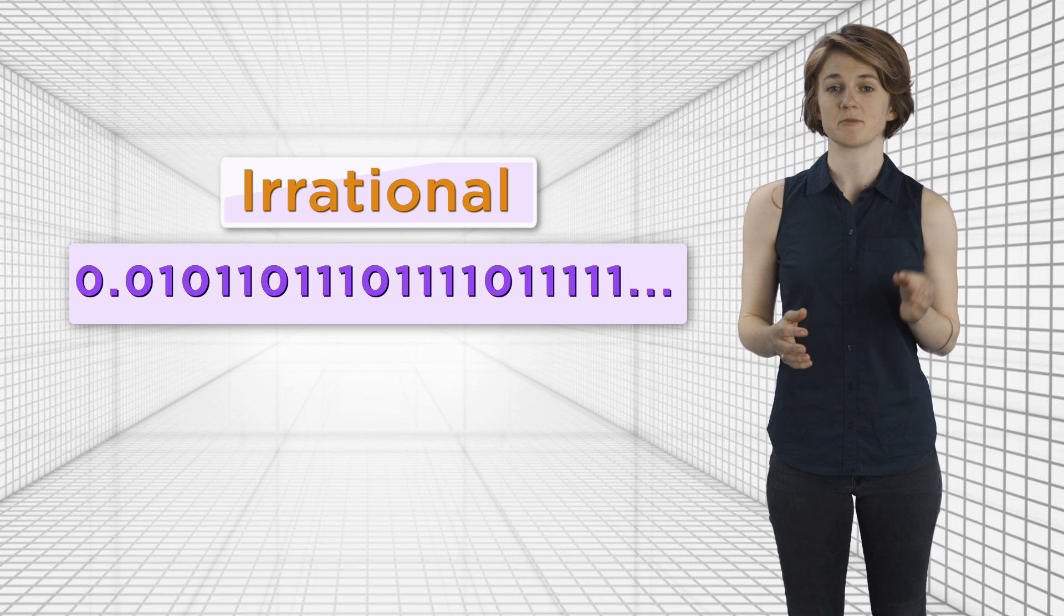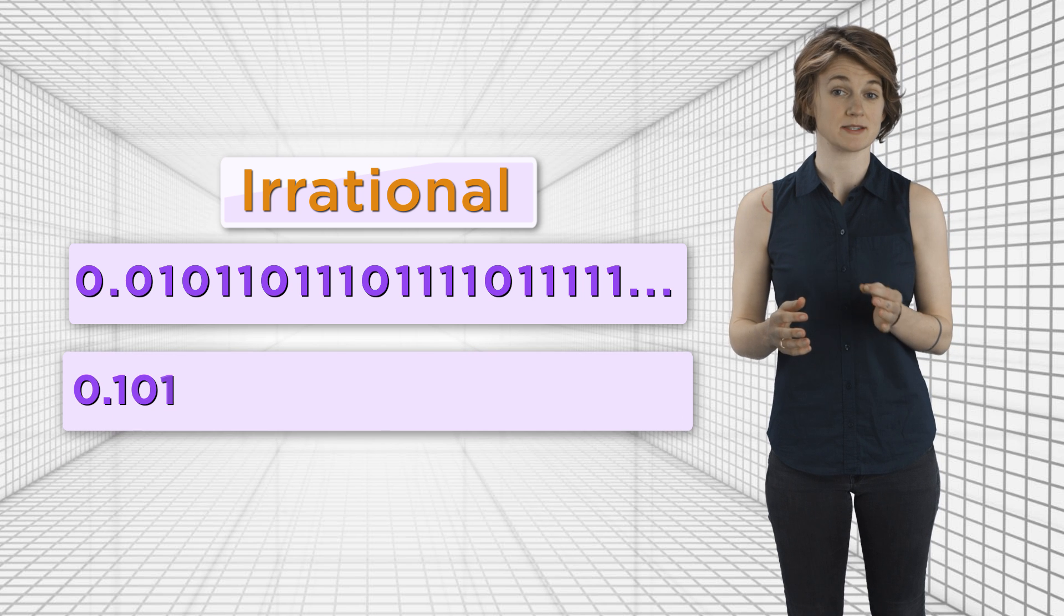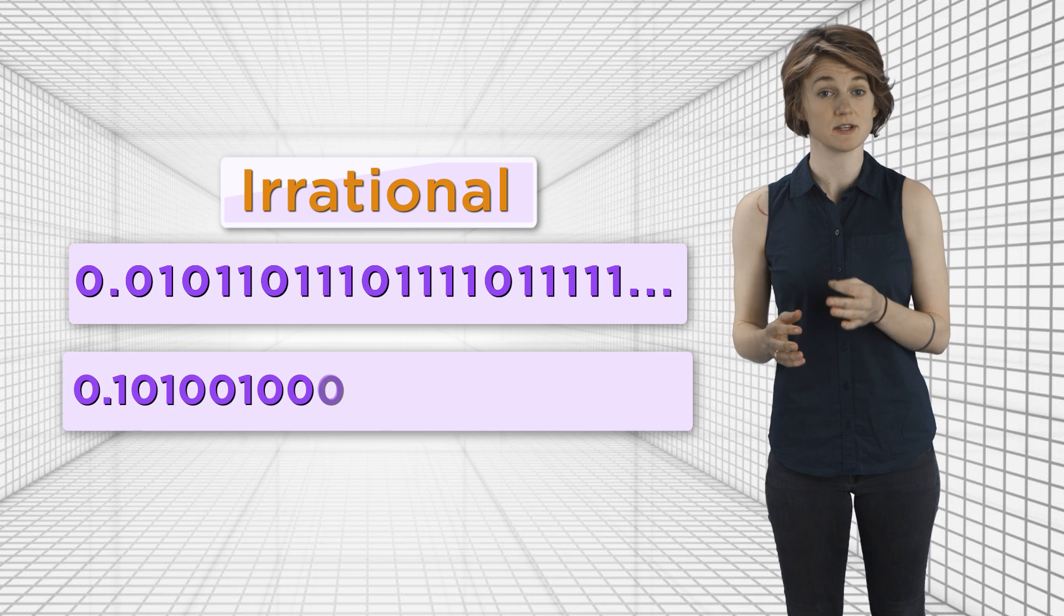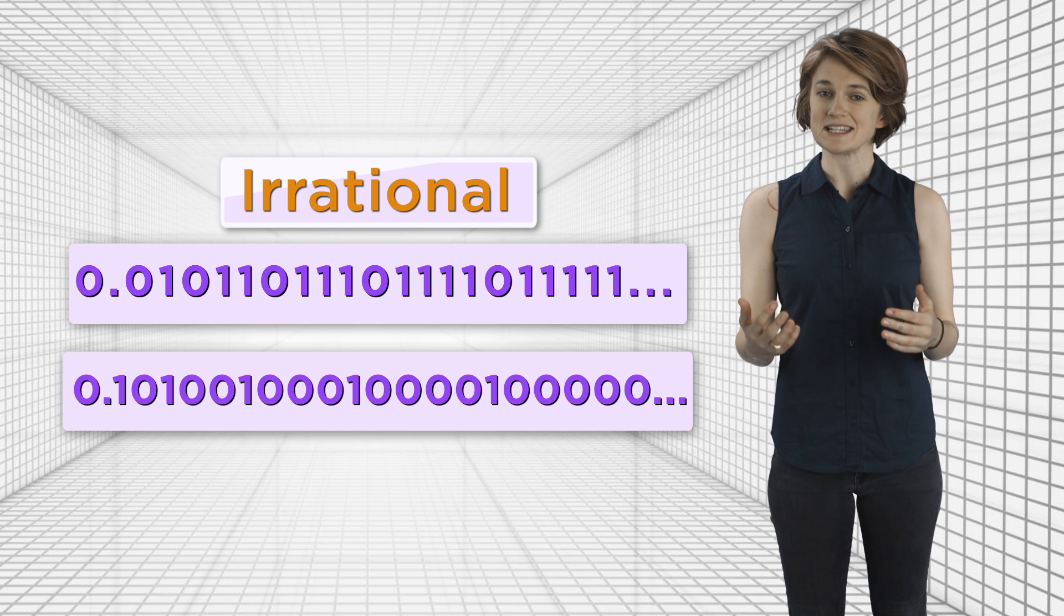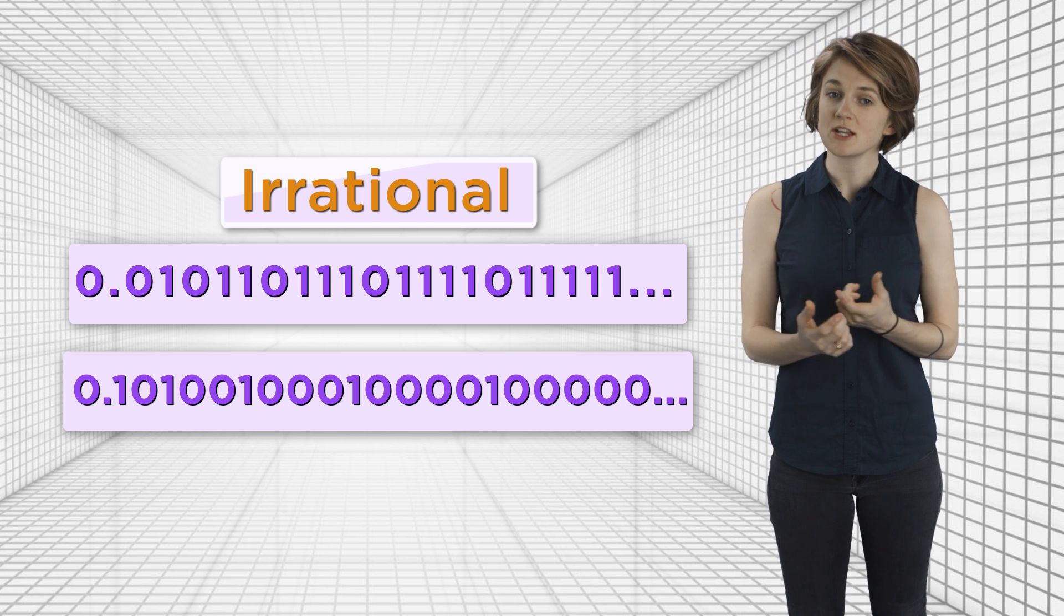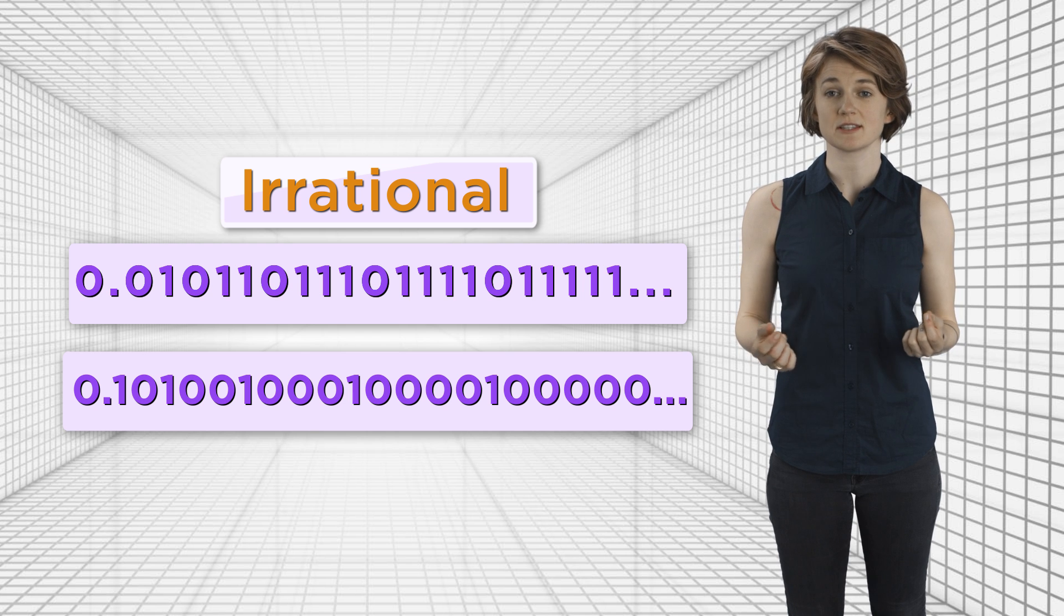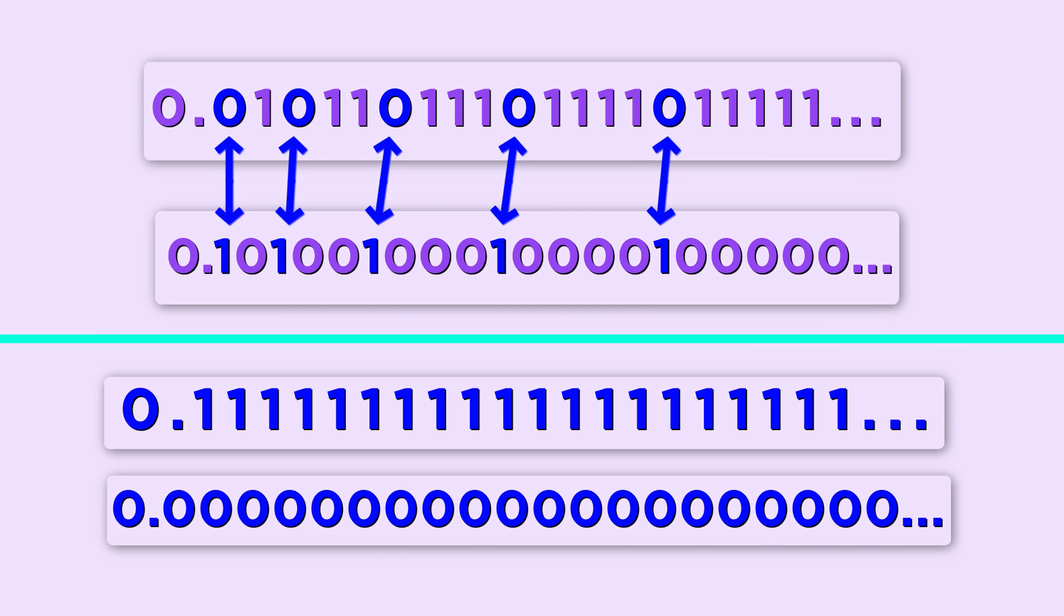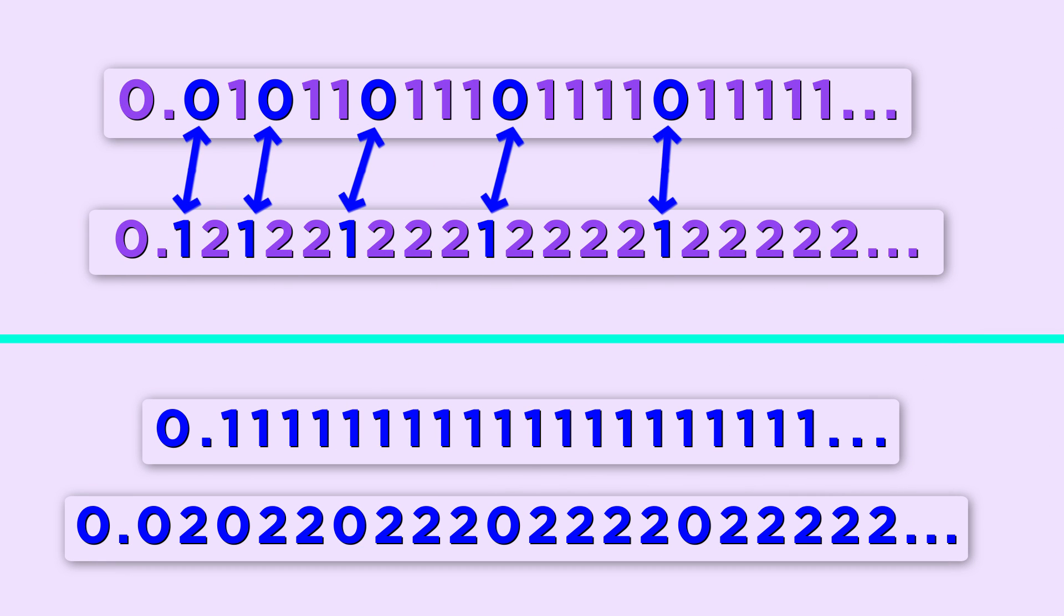Similarly, the number 0.10100100... and so on is irrational. But if we exchange infinitely many of their digits, like this, we get two rational numbers, 0 and 1/9. Or we could trade these digits of these two irrational numbers. In this case, one of the resulting numbers is rational and one is irrational.